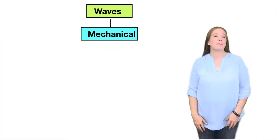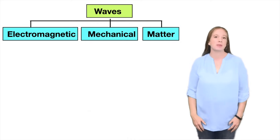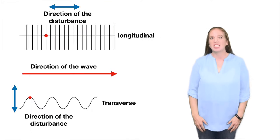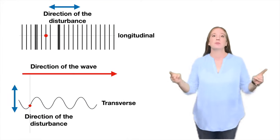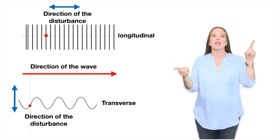Waves can be mechanical, electromagnetic, or matter. And mechanical waves can either be longitudinal or transverse. In longitudinal waves, the disturbance is parallel to the direction of the wave. And in transverse waves, it's perpendicular.